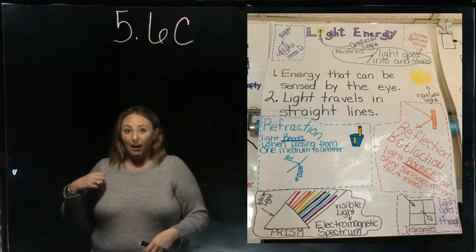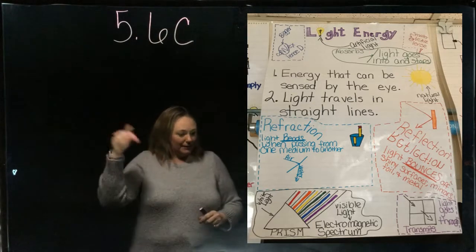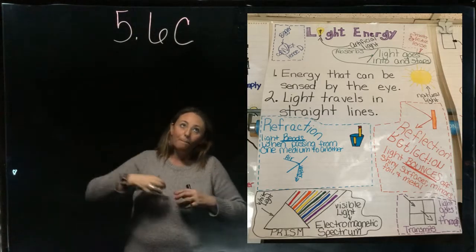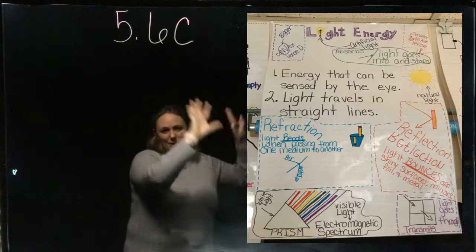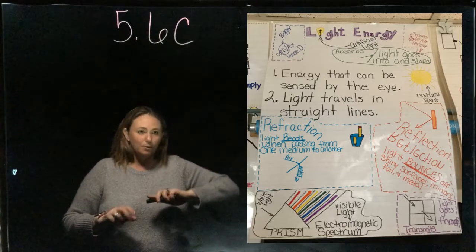So then let's talk about prisms. So when white light comes and hits a prism—boom!—the other side, rainbow colors come out. It's beautiful, beautiful, beautiful rainbow colors.